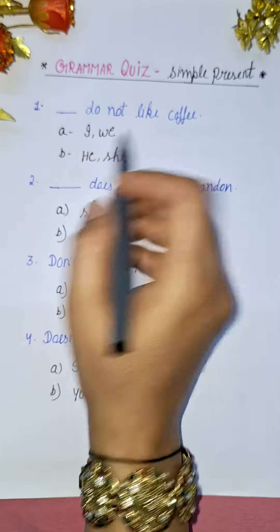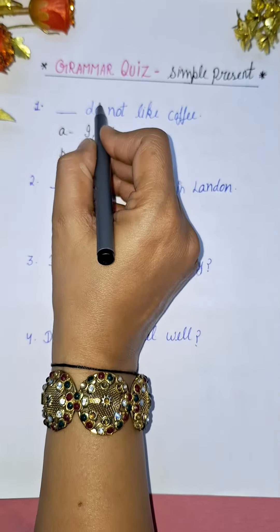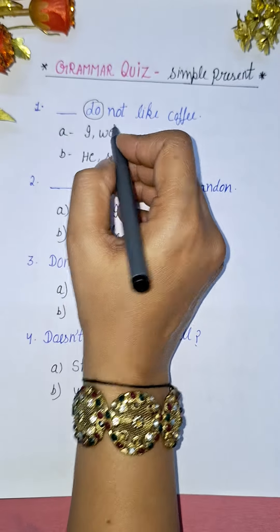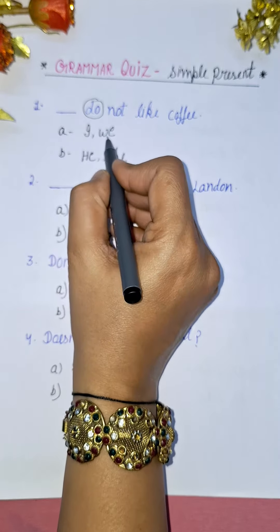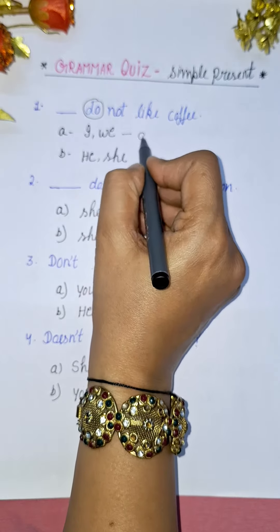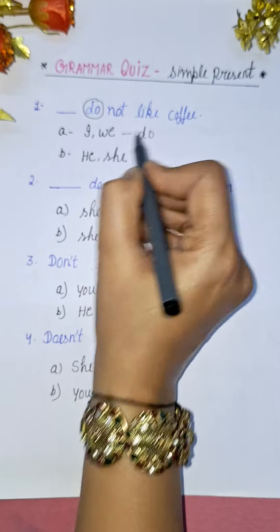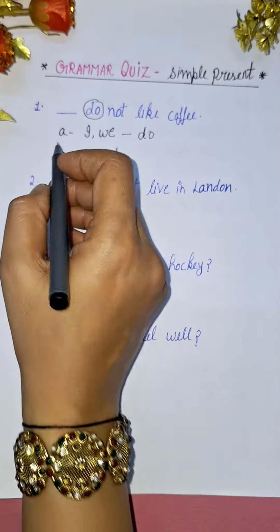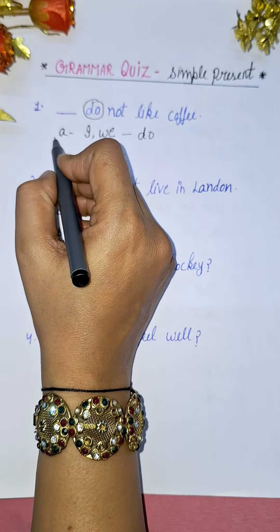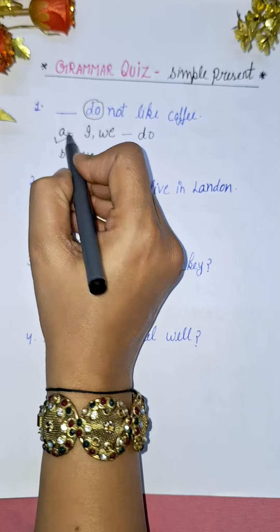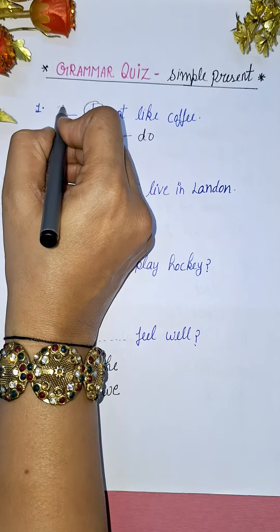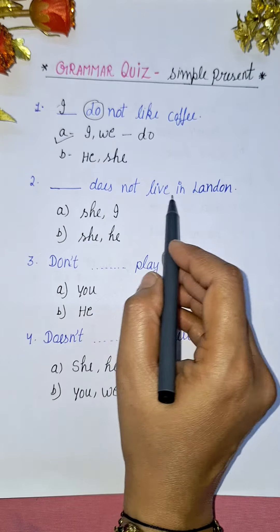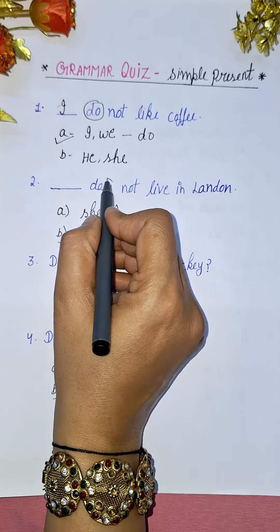First question: dash 'do not like' copy. The keyword here is 'do'. With 'do', we always use I, we, you, they — that is, plural subjects. So the right options here are I or we. For example: 'I do not like coffee.'